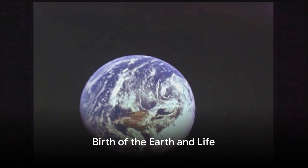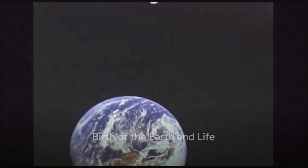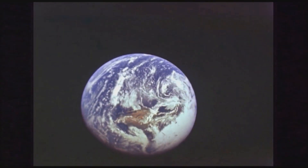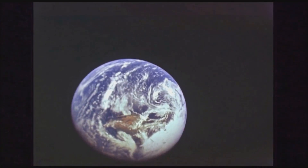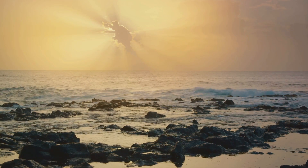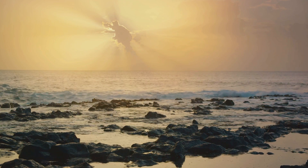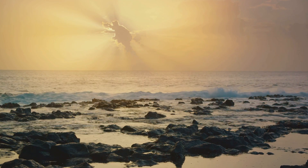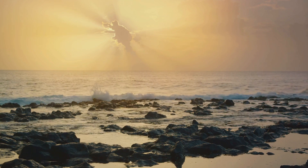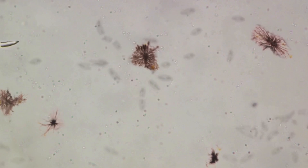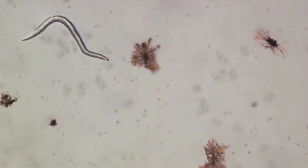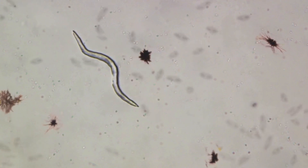Around 4.5 billion years ago, a unique planet was formed: our Earth. Born from the dust and gas of the solar nebula, Earth began as a molten mass, gradually cooling and forming a solid crust. Over time, volatile gases escaped from the planet's interior, creating the first atmosphere. Rain from this early atmosphere fell for millions of years, filling the basins that became our oceans. Yet it was in these oceans, under just the right conditions, that the true marvel occurred — the birth of life.